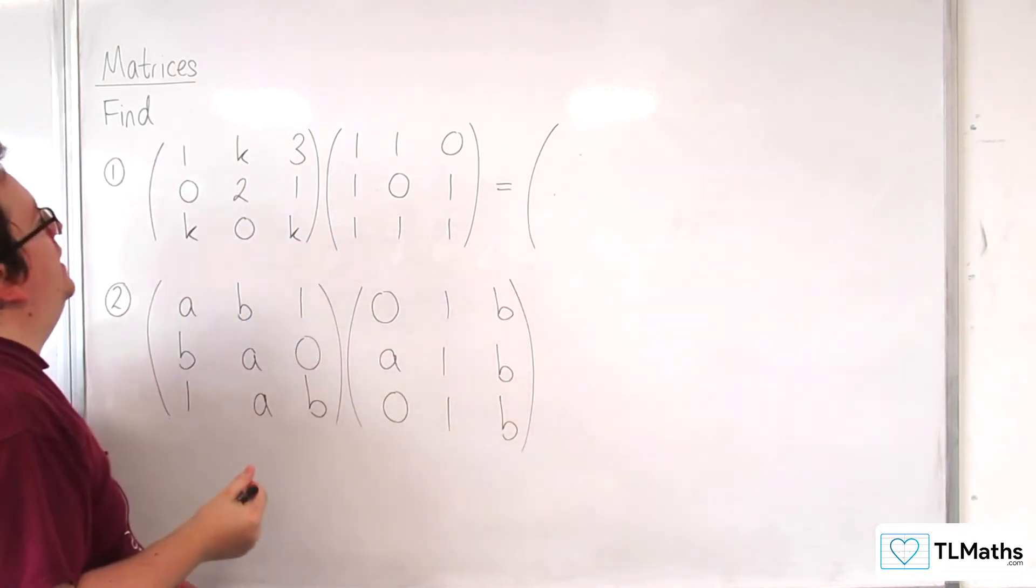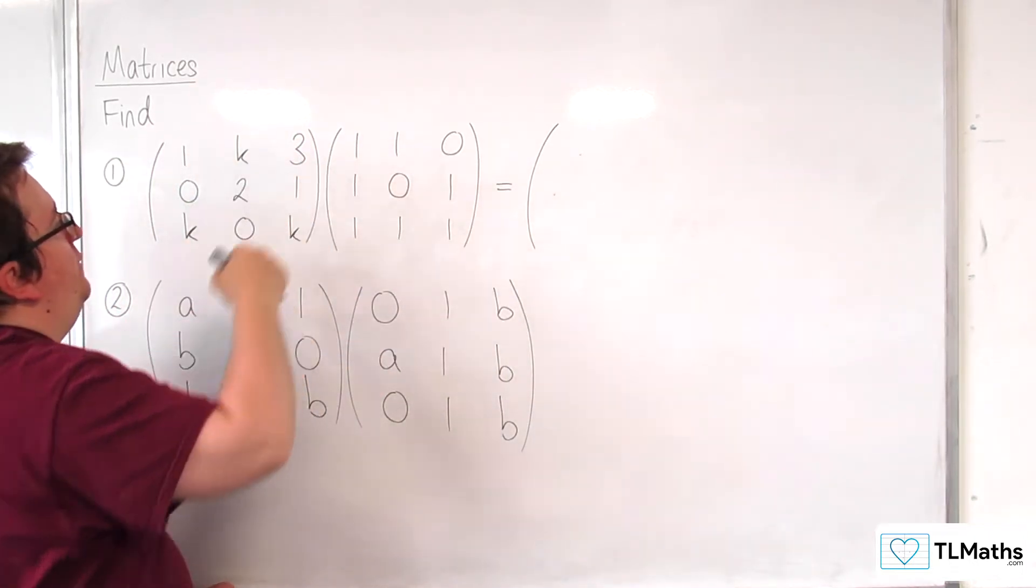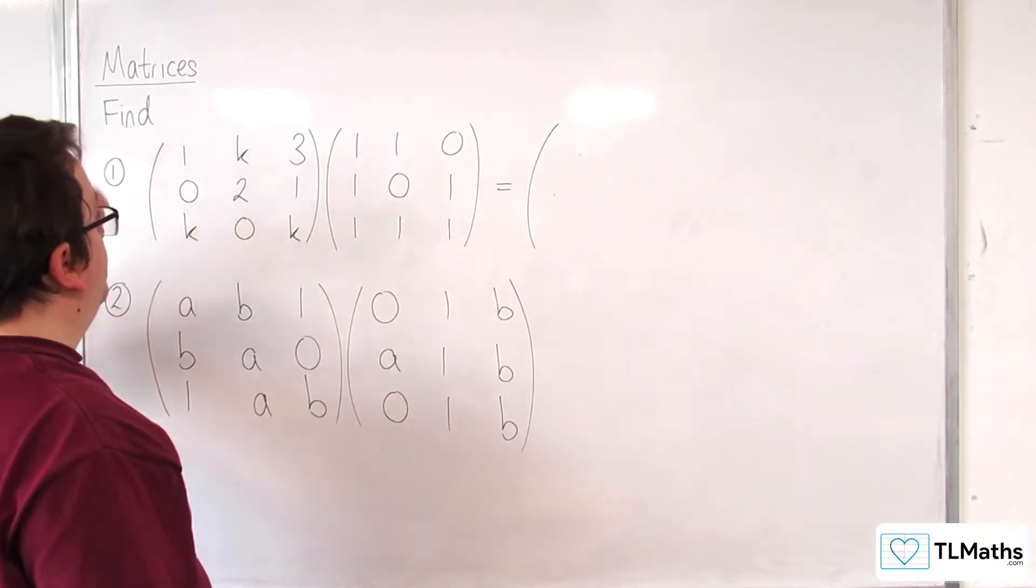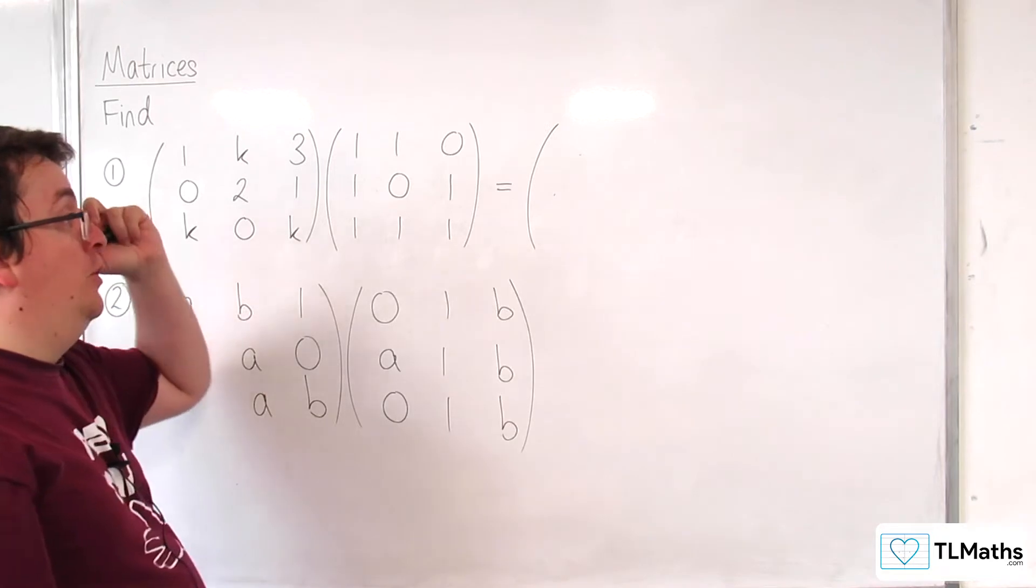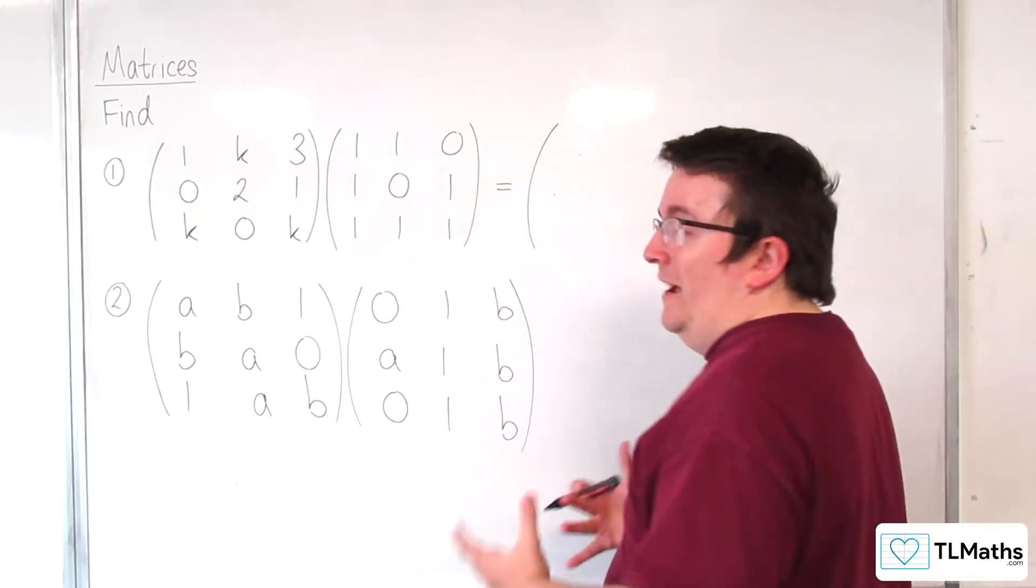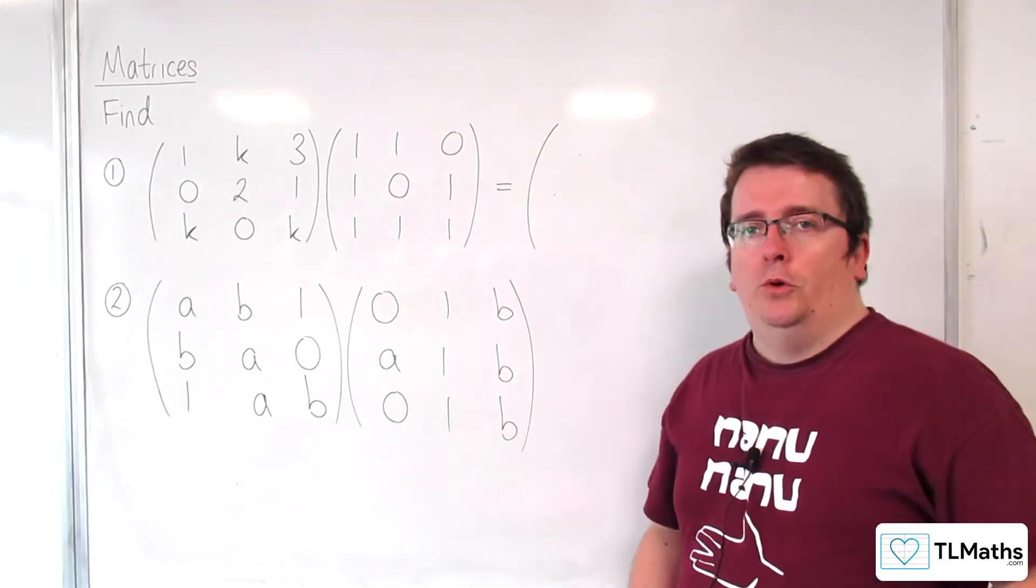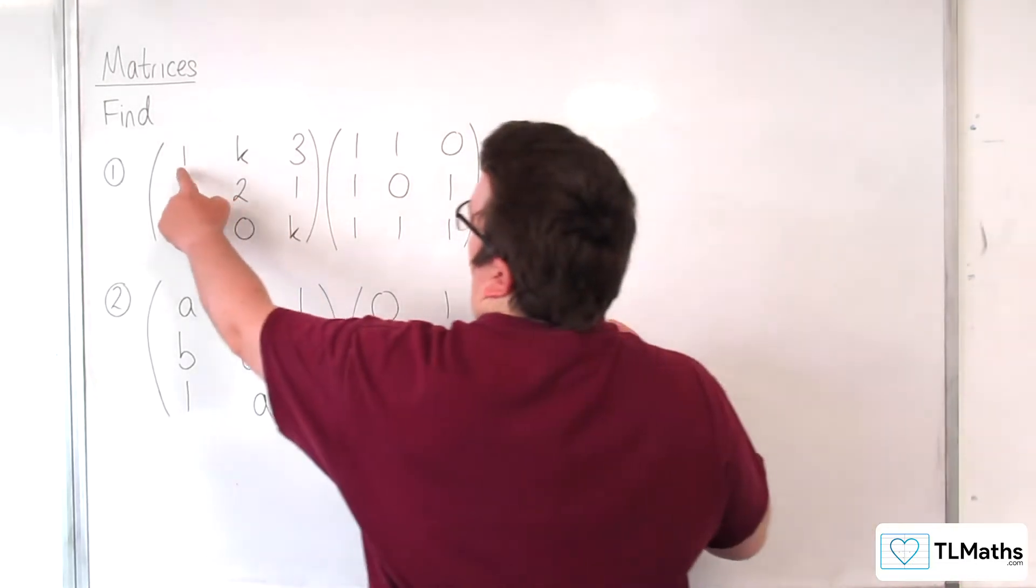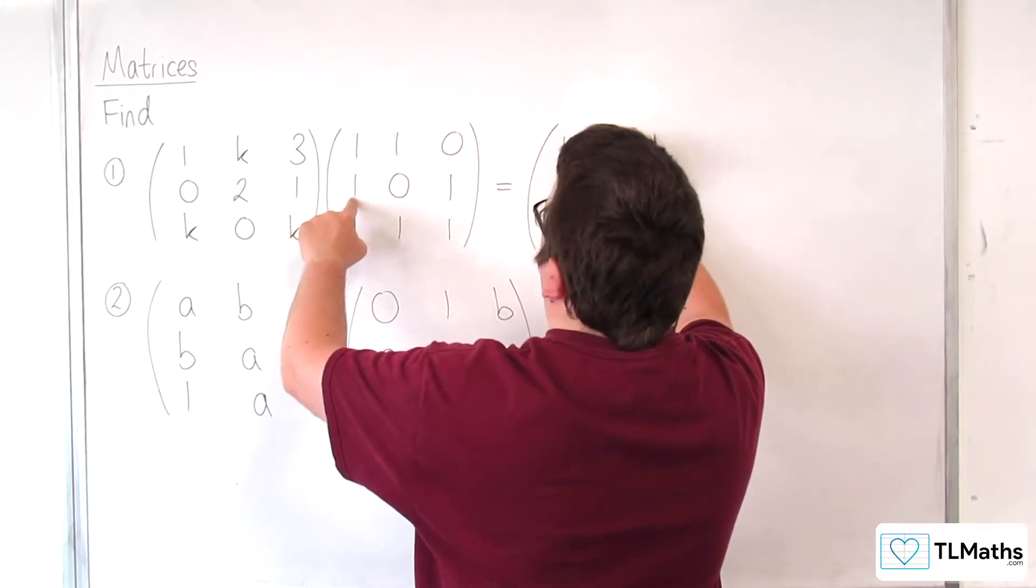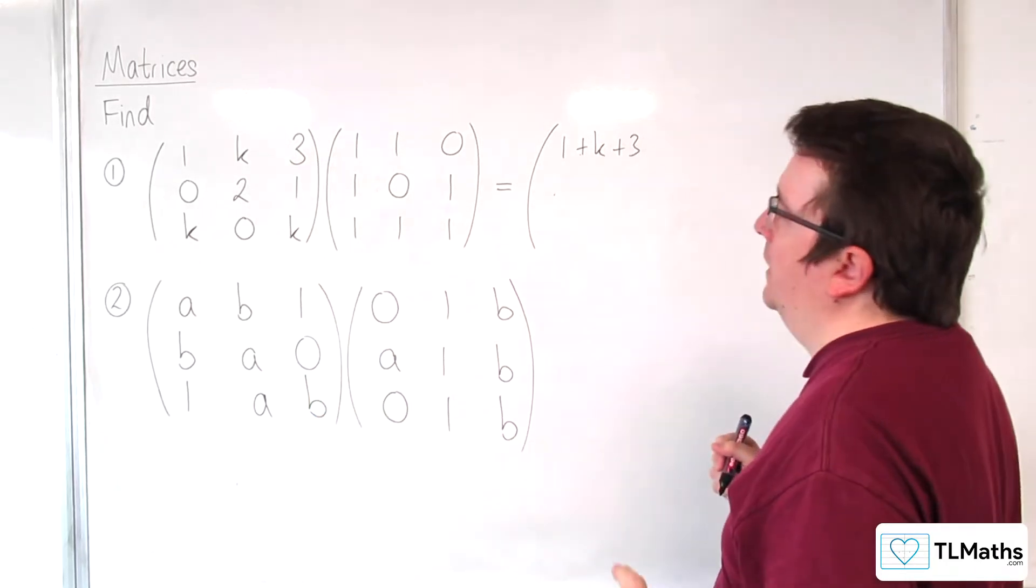So our first one here, we're going to multiply the top row by the first column, so 1k3 times 111. So if you want to you can write this out longhand first if you like and sometimes that can be easier to simplify it because otherwise you're going to have to do it all in your head. So we're going to get 1 times 1, k times 1, 3 times 1. So that's the first element.